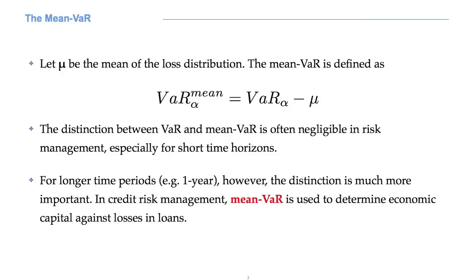Another type of VaR which is often used is the so-called mean VaR. That is to say, the VaR centered around the mean of the loss distribution. It is simply given by the difference between the VaR and the mean mu. As we will see later on, the mean VaR is used to determine the economic capital against losses in loans.